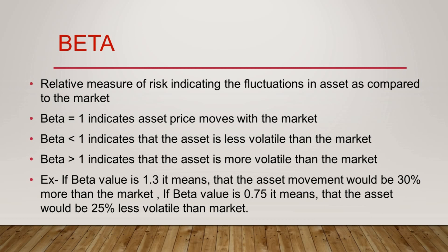If beta equals 1, it indicates that your asset's price moves with the market. If beta is less than 1, the asset is less volatile than the market. If beta is more than 1, the asset is more volatile — meaning with a 1% change in the market, your asset changes by more than 1%. For example, if beta is 1.3, the asset moves 30% more than the market. If beta is 0.75, the asset moves 25% less than the market.